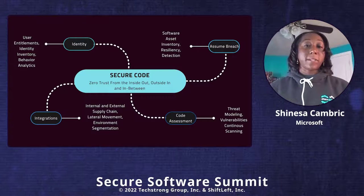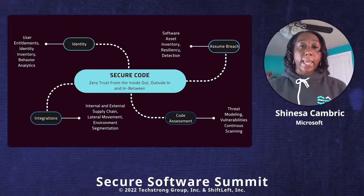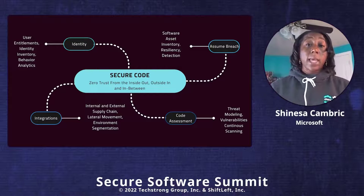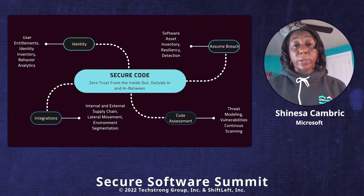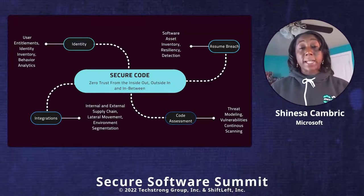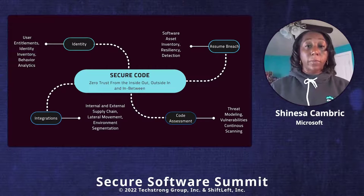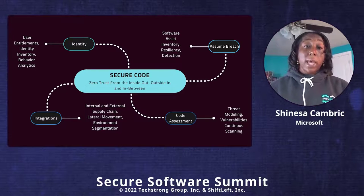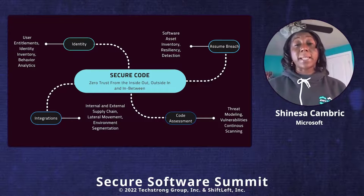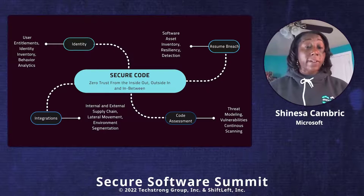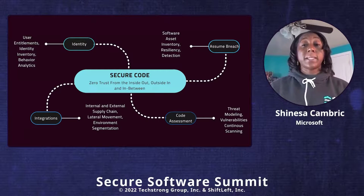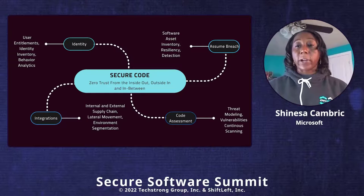You want to go through the exercise of mapping your software components to business objectives, so you understand what's running in your environment and how it supports your business — and how that aligns to your CIA priorities. Looking at zero trust and building a defensive software architecture, we need to look at this from three angles: protecting from the inside out, from the outside in, and in between. There are four categories to focus on, at a minimum. The first is identity — everything revolves around identity: who can access what, when, and where. The scope needs to go beyond users to the identity of things — APIs, bots, devices, and system and service accounts.